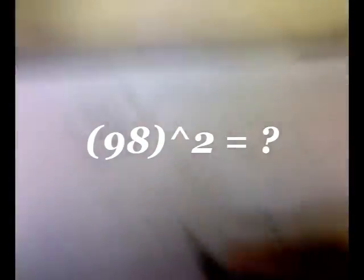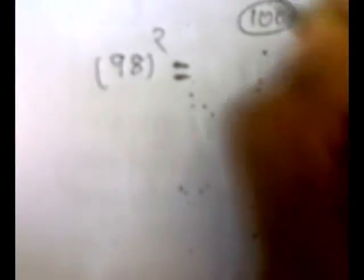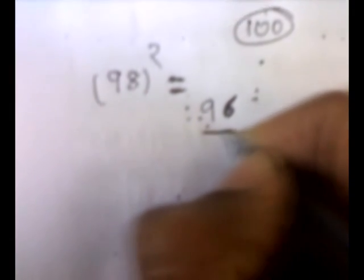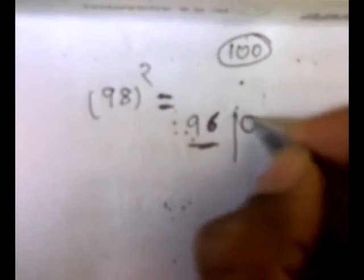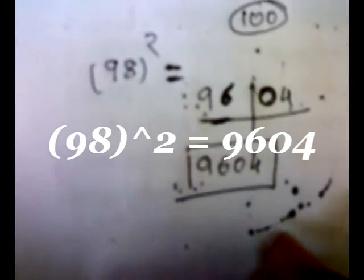Let's take 98 squared. It seems like a very big number to calculate, but using our method: 98 is 2 away from 100. We subtract 2 from 98 to get 96 — the first two digits. Then the square of 2 is 4, written as 04. So our answer is 9604.